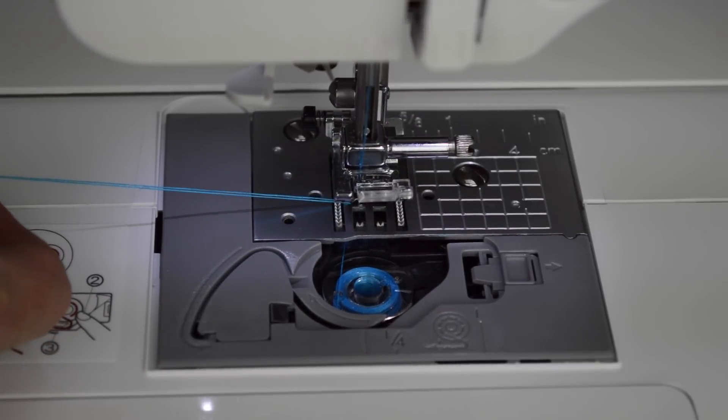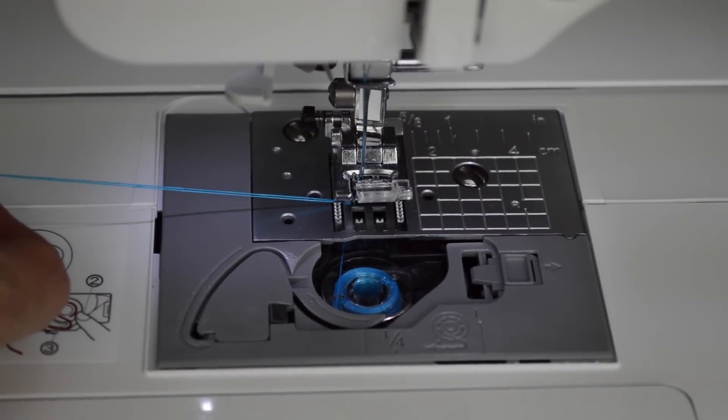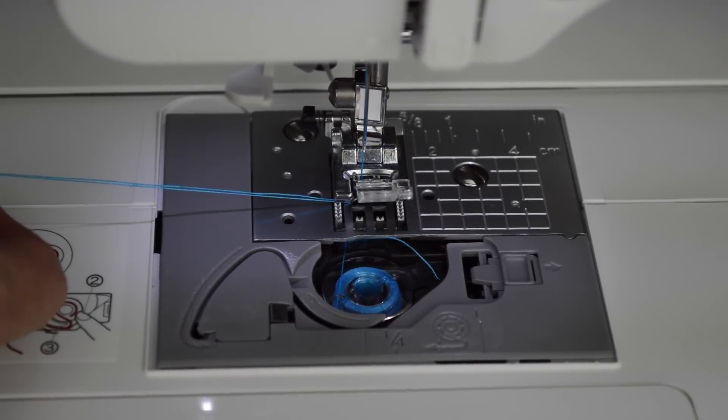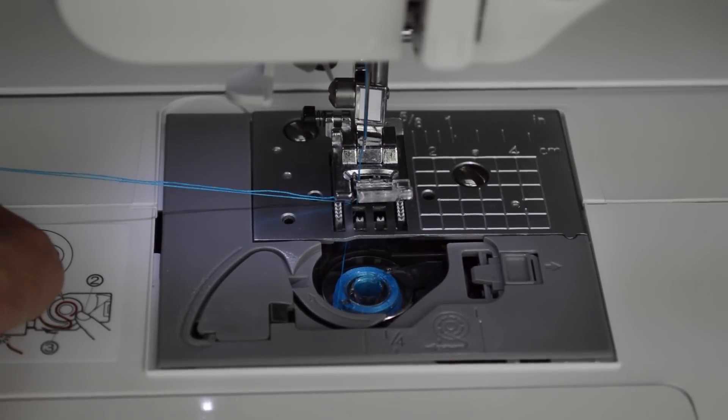There's going to be a little bit of thread, the needle thread, that's going to get brought around and hooked over. There it is. See that being pulled around the bobbin? That is how the two threads get hooked together.